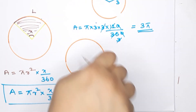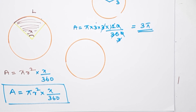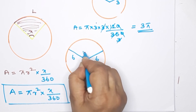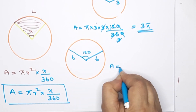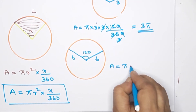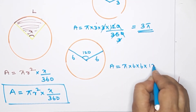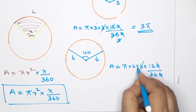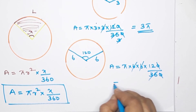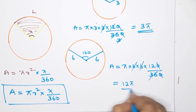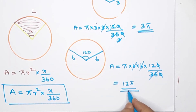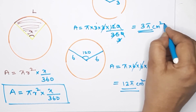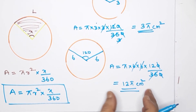Now for the same central angle with radius 6 cm: Area = πr² × (x/360) = π × 6 × 6 × (120/360). Since 6² = 36, and 120/360 simplifies, the area equals 12π. The area is 12π cm².